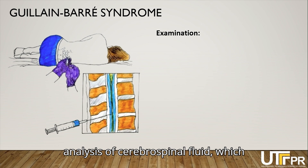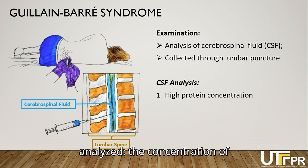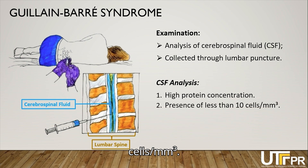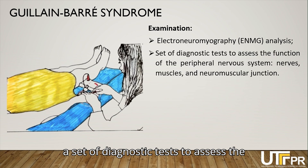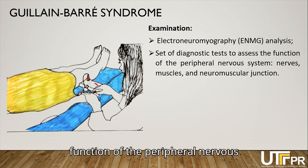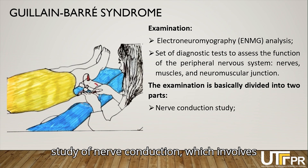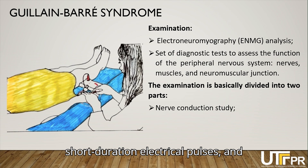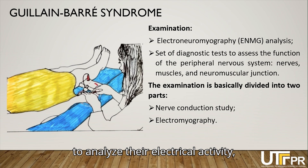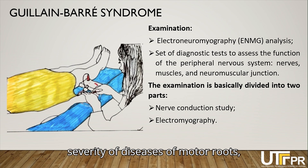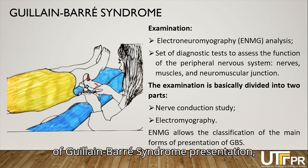One test that can be performed is analysis of cerebrospinal fluid, collected through a lumbar puncture, in which the concentration of protein and the presence of cells per mm³ will be analyzed. Another examination method is electroneuromiography, a complementary set of diagnostic tests to assess the function of the peripheral nervous system, nerves, muscles, and neuromuscular junction. The examination is divided into two parts: the study of nerve conduction, which involves applying low-intensity, short-duration electrical pulses; and electromyography, performed using small needles inserted into muscles to analyze their electrical activity, detecting and quantifying the severity of diseases of motor roots, spinal cord, and muscle fibers.